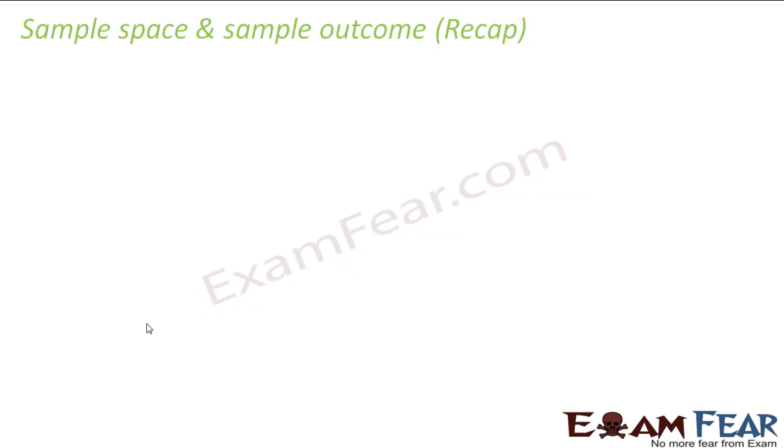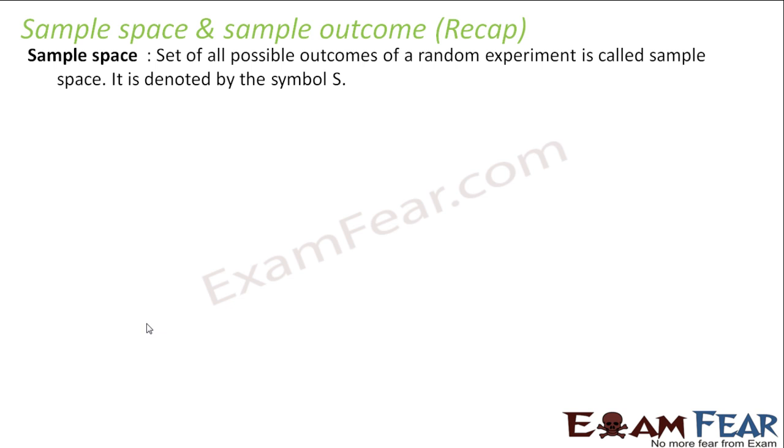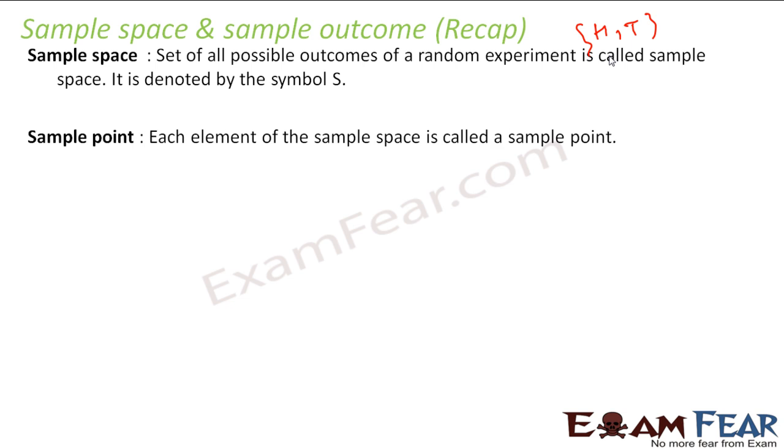And we also know what is sample space and sample outcome. This is generally used for the axiomatic approach where we have these sets. So sample space is nothing but the set of all possible outcomes for the random experiment. For example, when you throw a coin you get a head or tail. So this is my sample space.